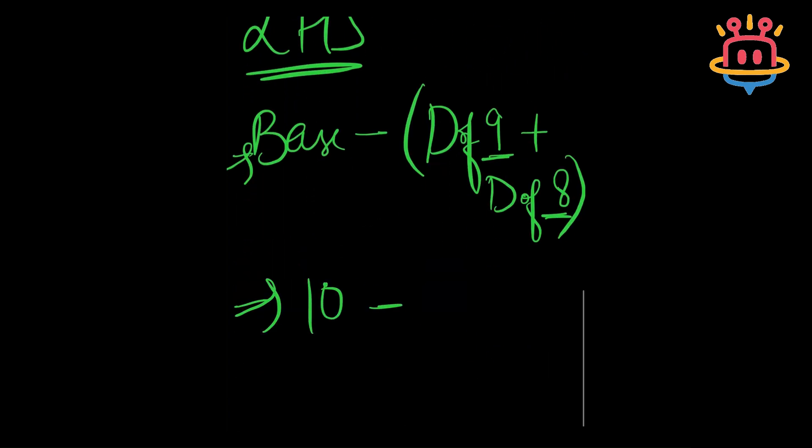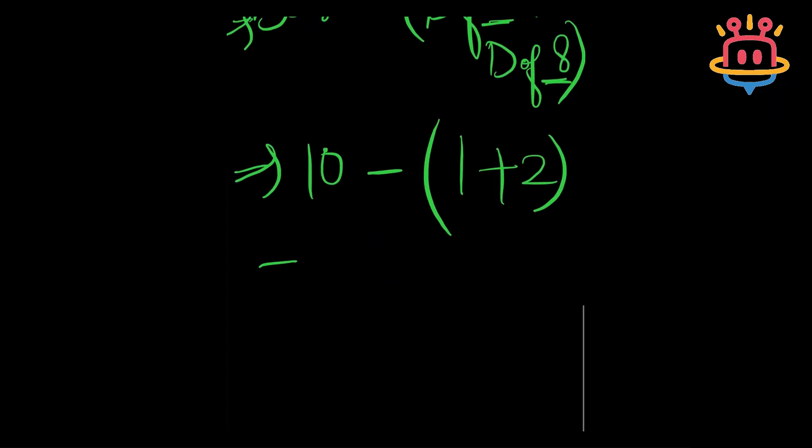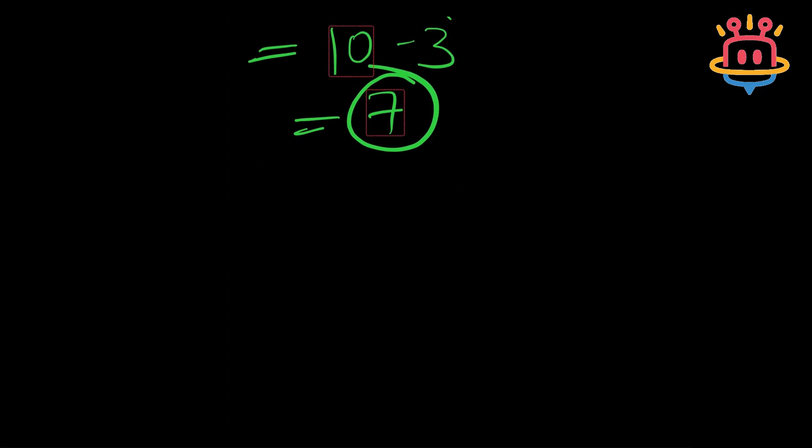So, when I put my values here, base was 10, deficiency of 9 was 1, deficiency of 8 was 2. So, 10 minus 3 is 7. Similarly, we will apply the RHS formula also.